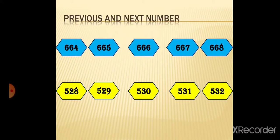So children, previous and next numbers are now very clear to you. To get the previous number, you subtract 1 from the given number. To get the next number, you add 1 to the given number.